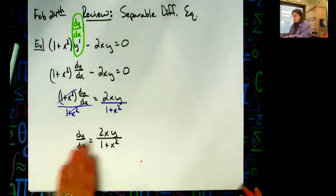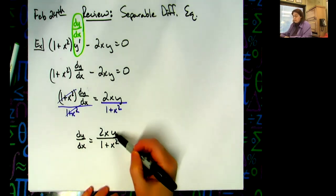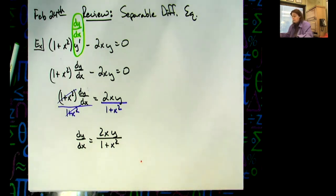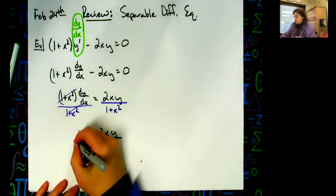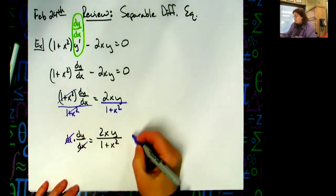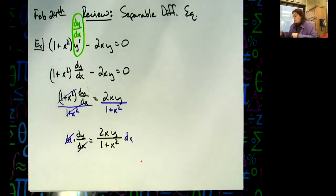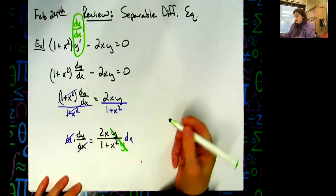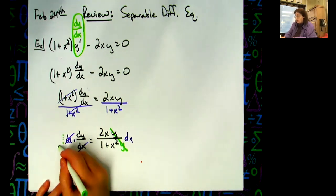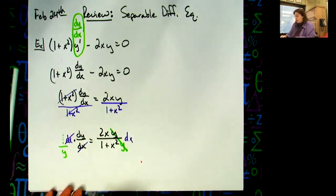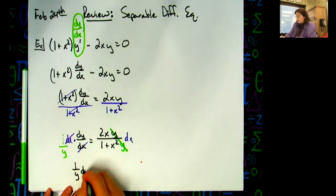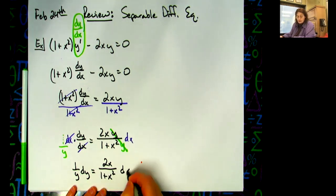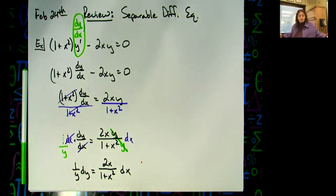Moving the dx is easy — multiply both sides by dx. I also need to get rid of the y, so divide both sides by y in the same step. The y's cancel on the right, leaving one over y, dy equals two x over one plus x squared, dx. The variables are now separated.